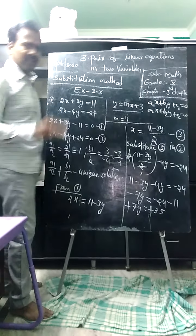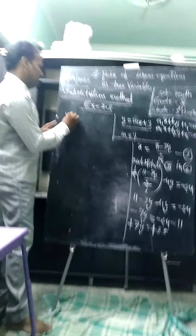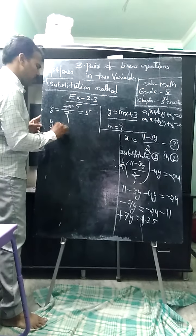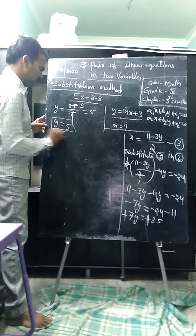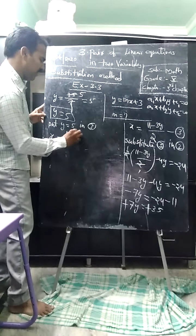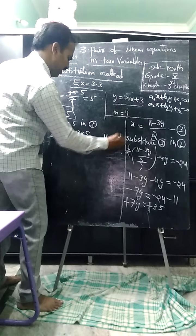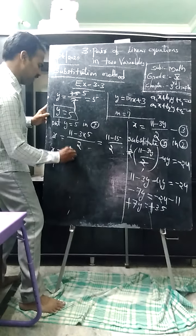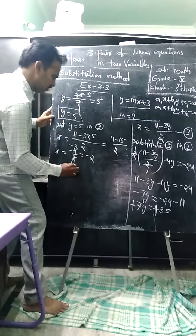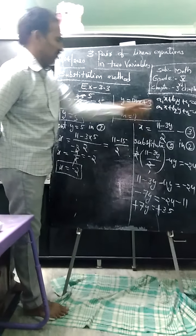After simplifying, y equals 35 by 7. Since 7 fives are 35, y equals 5. Now put y equals 5 in equation 3. We have x equals 11 minus 3 times 5, which is 11 minus 15, divided by 2. That gives x equals minus 4 by 2, which equals minus 2. If you want, you can verify by putting x equals minus 2 back into one of the equations.